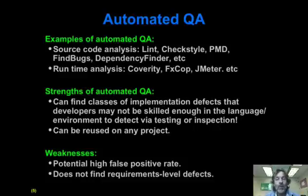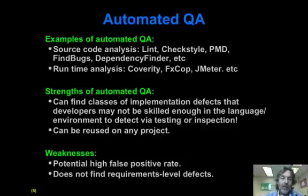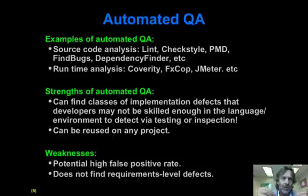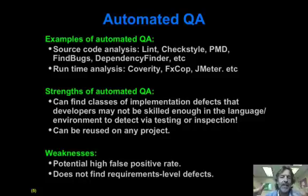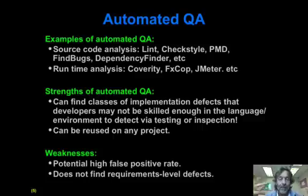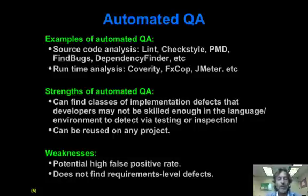On the other hand, automated quality assurance tools do source code analysis or runtime analysis. They are generally tools you set up with domain-independent rules about coding format, knowledge of the language, or design requirements or levels of dependency that you find acceptable. You run these tools and, after having them configured, they're basically cheap to run. They may take a long time, but they run in the background and don't require a human in the loop.